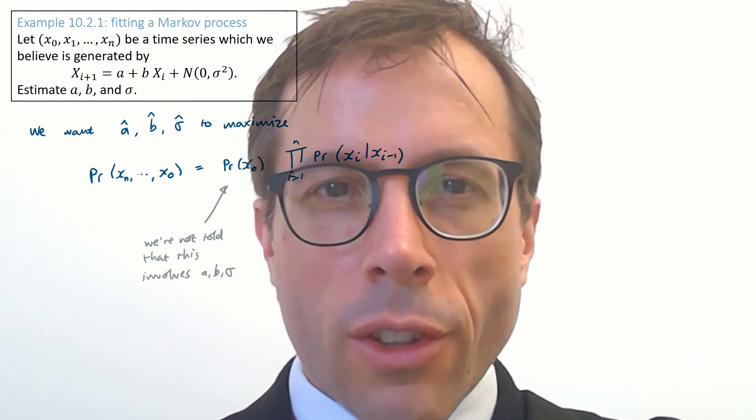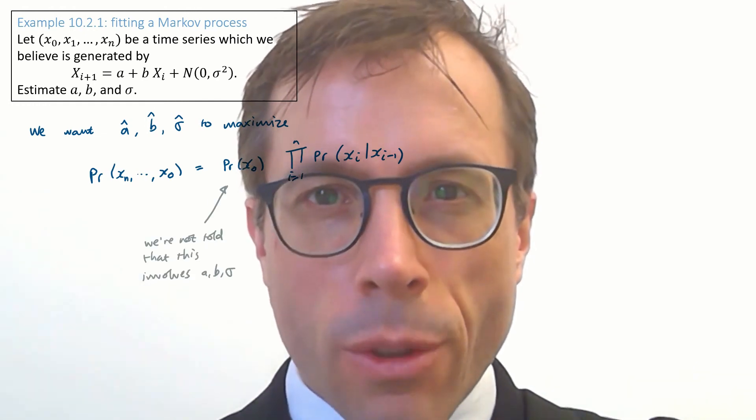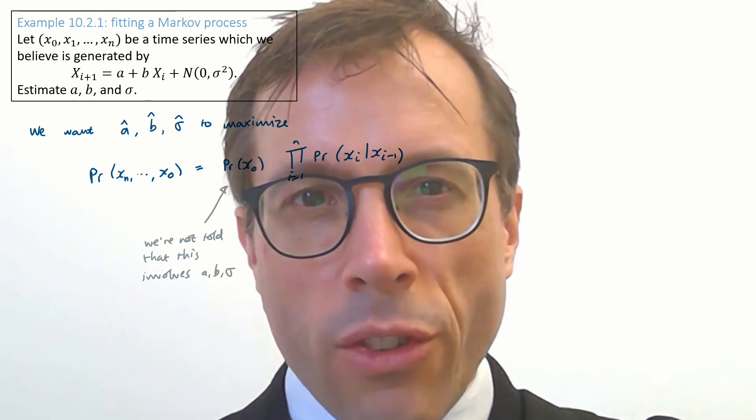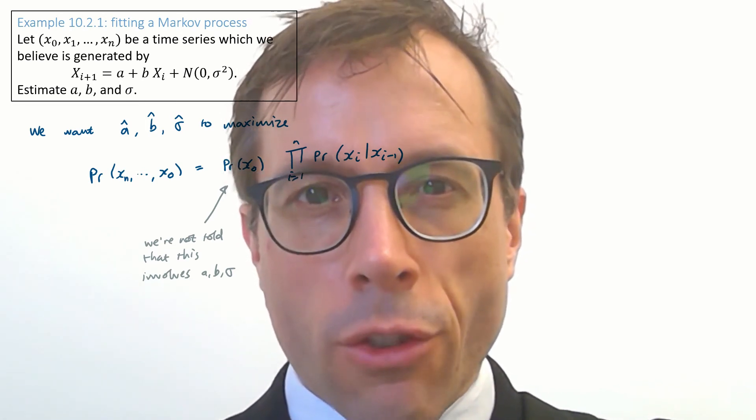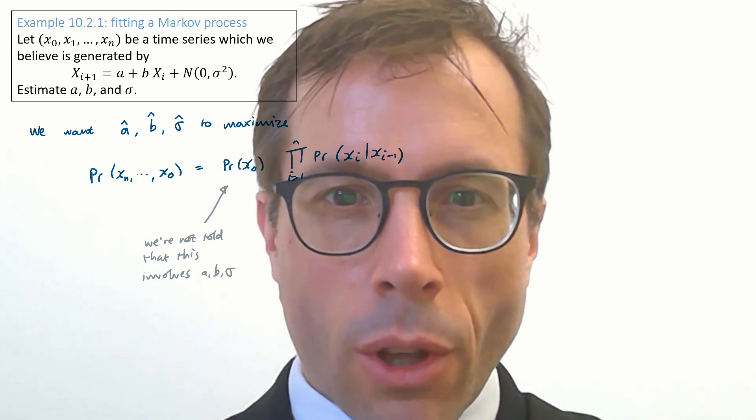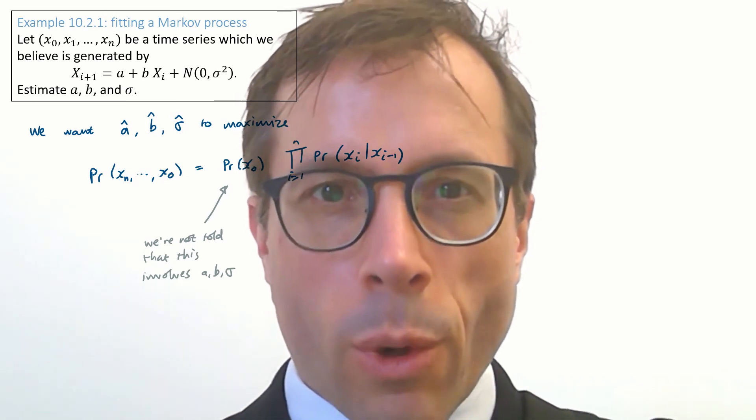Well, the question doesn't actually tell us anything about the distribution of the initial state x0. So it's reasonable, I think, for us to assume that the distribution of x0 does not involve those unknown parameters, else the question would have told us.